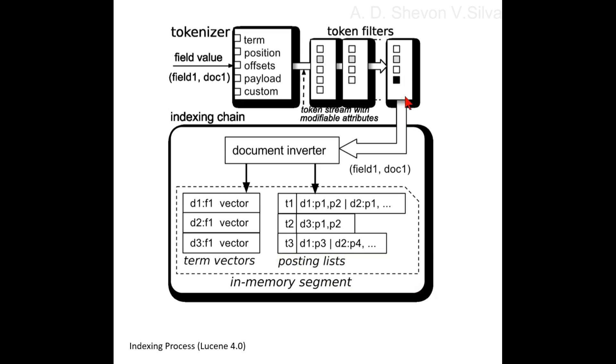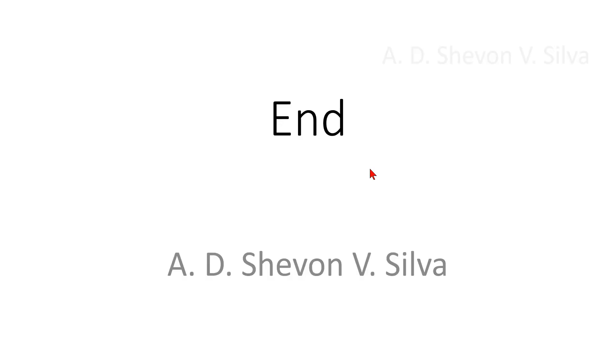The token filter is connected to document content via field 1 and doc 1 in this example. This is the end of my presentation. Thank you very much for watching.